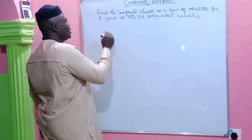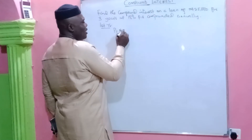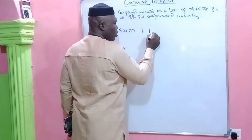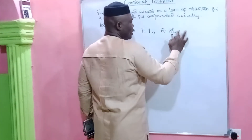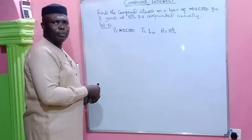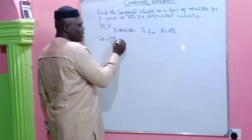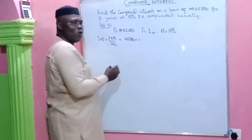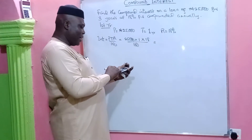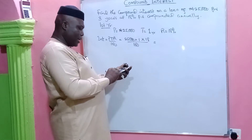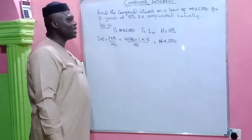Assuming we have to use simple interest: in our first year, the principal is 25,000 Naira, the time will be one year, and the rate is 18%, which is 18 over 100, or 0.18. Our simple interest is principal times time times rate all over 100. So we take 25,000 Naira, multiply by one year, the rate is 18%, divide by 100. So we have 25,000 times 1 times 18, divided by 100, giving us 4,500 as the interest for that first year.